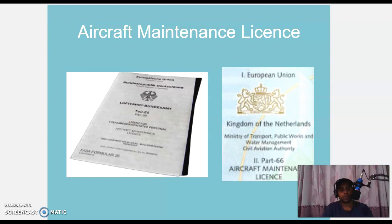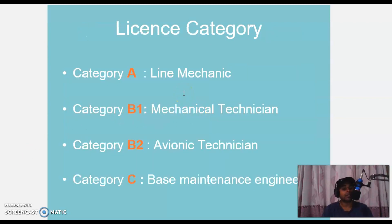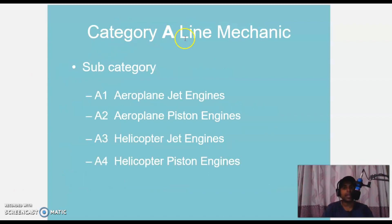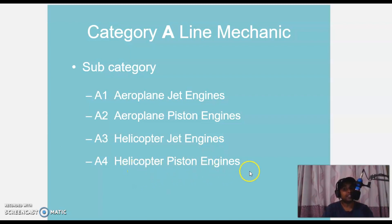License categories: there are four categories — Category A, Category B1, Category B2, and Category C. Category A is for line mechanics, Category B1 for mechanical technicians, B2 for avionics technicians, and Category C for base maintenance engineers. Category A has subcategories A1 (aeroplane jet engine), A2 (aeroplane piston engines), A3 (helicopter jet engines), and A4 (helicopter piston engine).